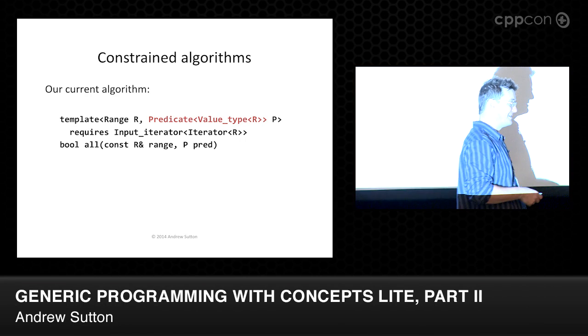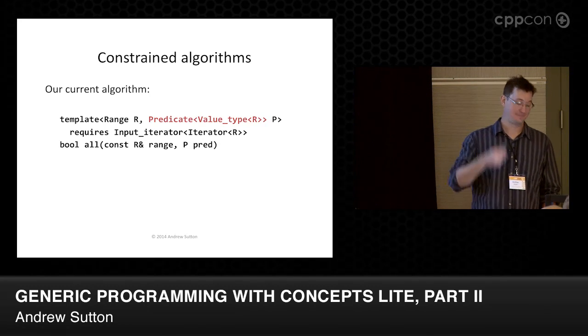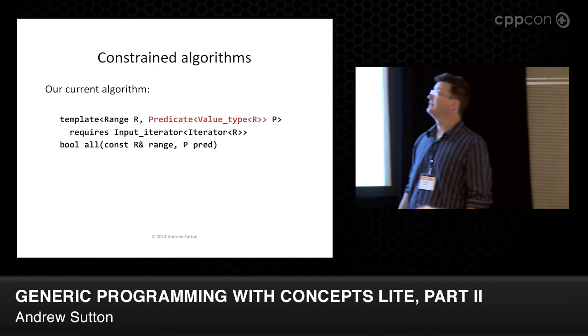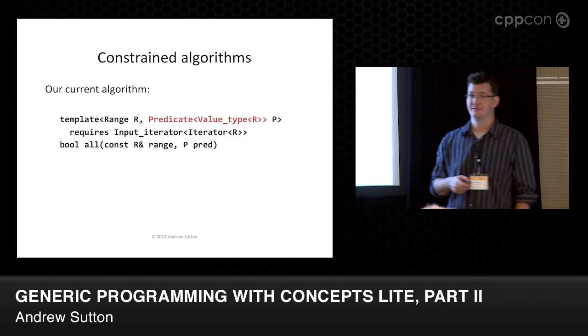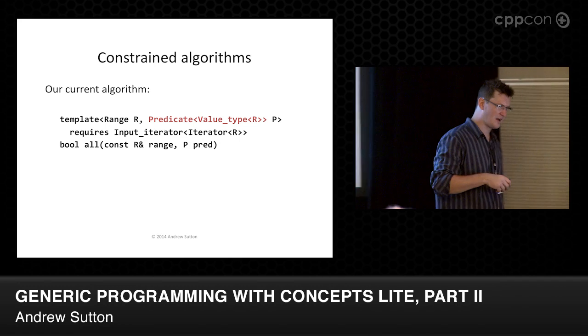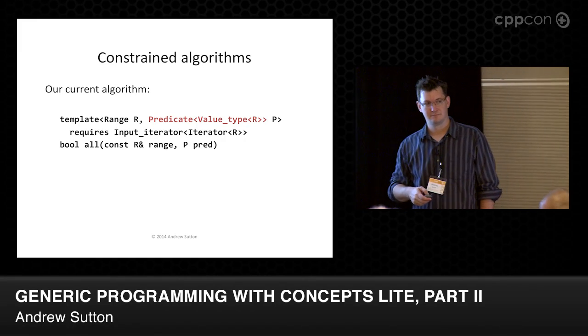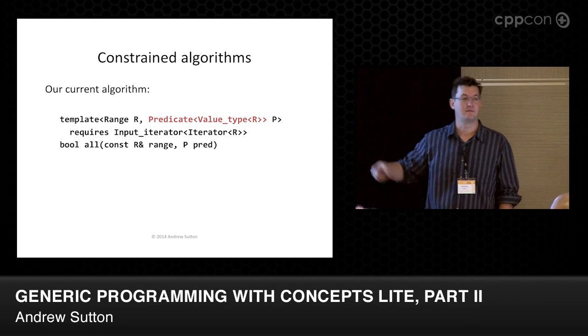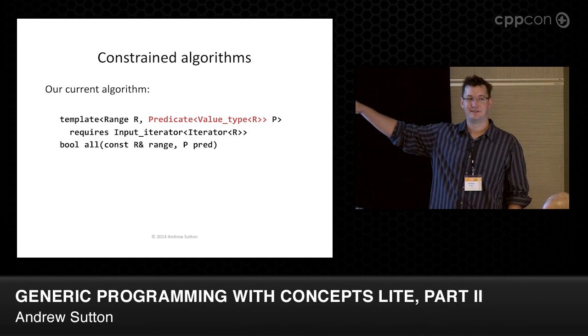If we use these concepts a lot, we might want to define a new one. We want to get rid of the last constraint here, so we can actually define a new concept called input_range — requires R to be a range and its iterator type to be an input_iterator. Then we can actually lift the entire set of constraints into the declaration in one shot. So all_of is now declared as: in_range R, and then this predicate thing. We can also strip out rvalue references from a forwarded argument through concept definitions.